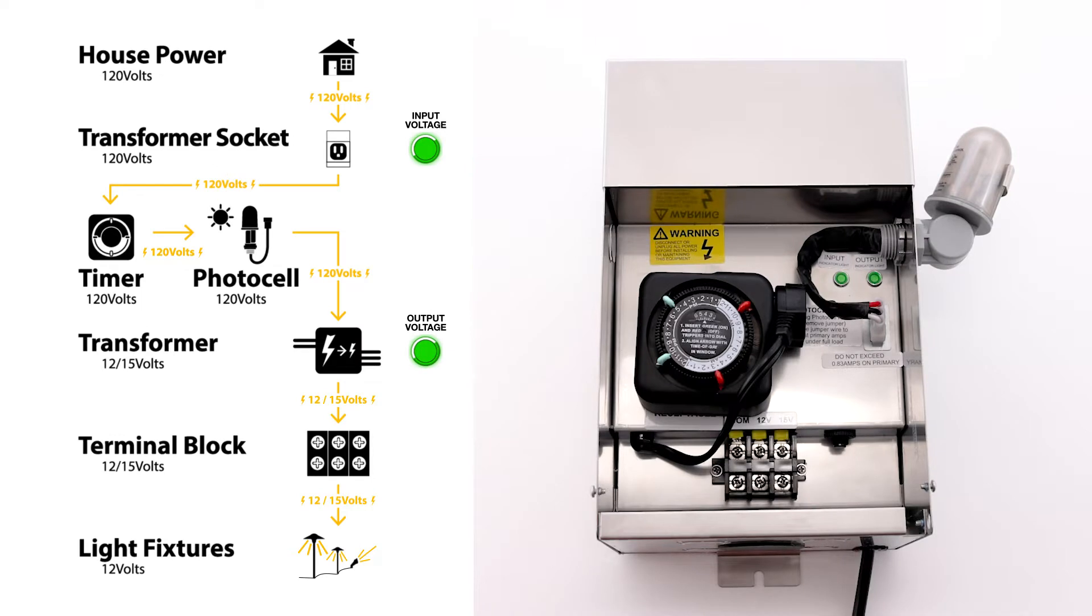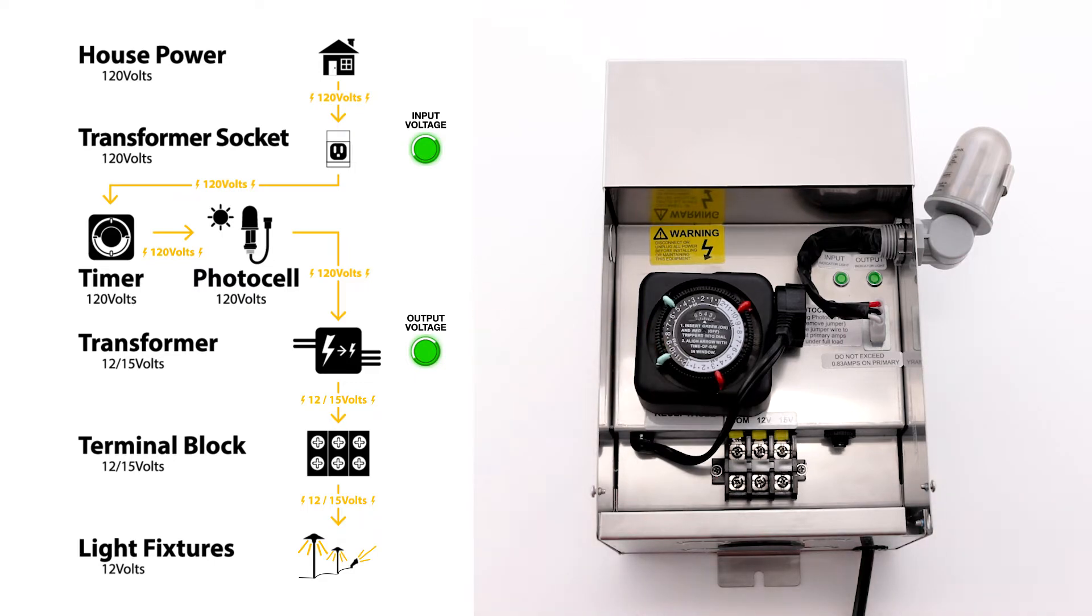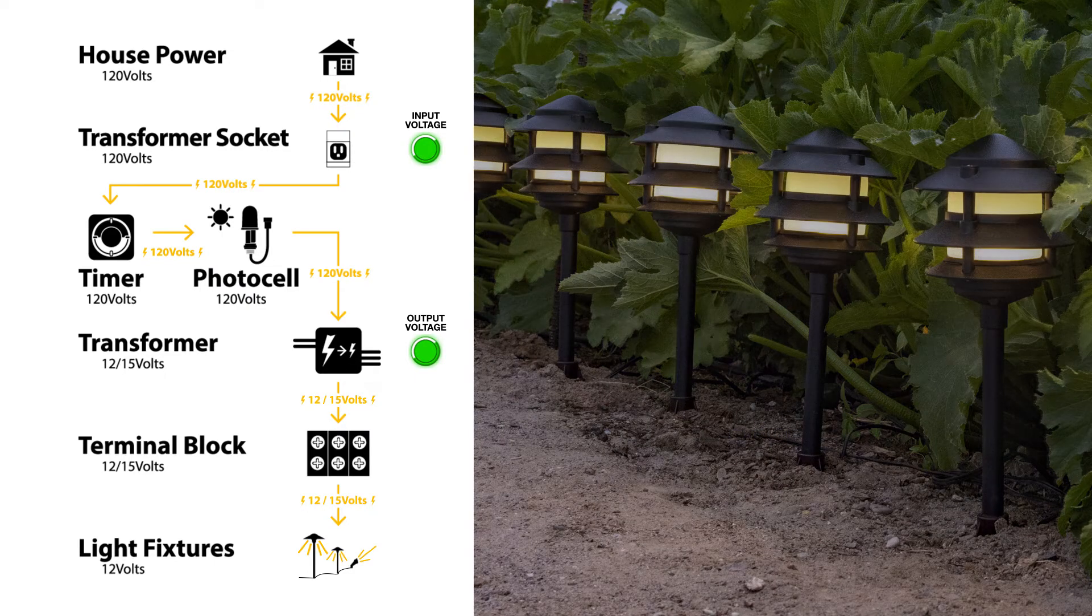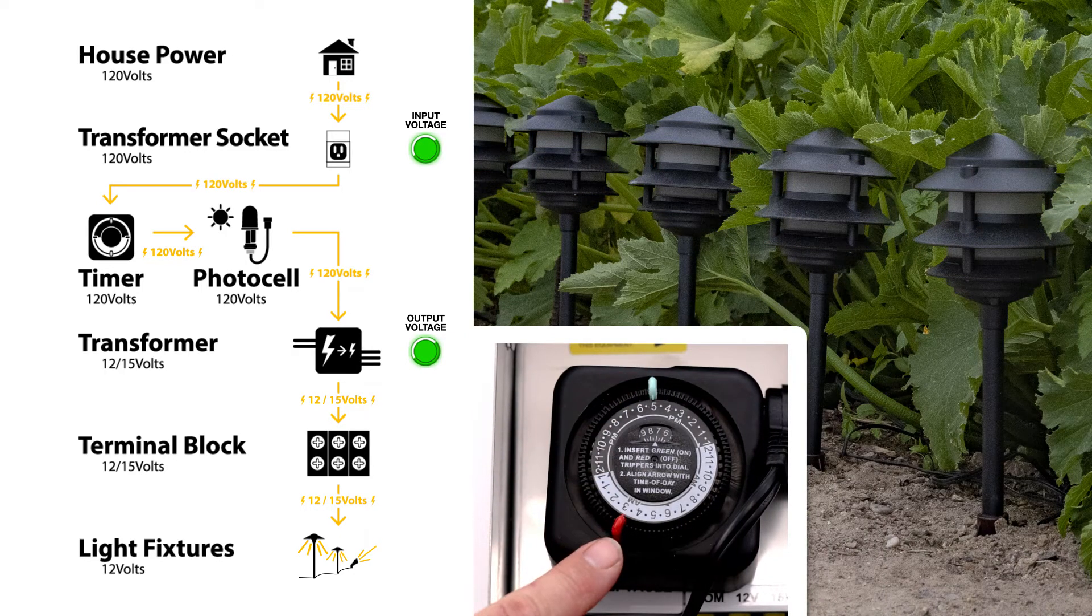Let's look at the timer and photocell used together to add more control over your system. Here is the flow chart for that application. The lights can be scheduled to come on when it gets dark, but will turn off at the time you have set on the timer.